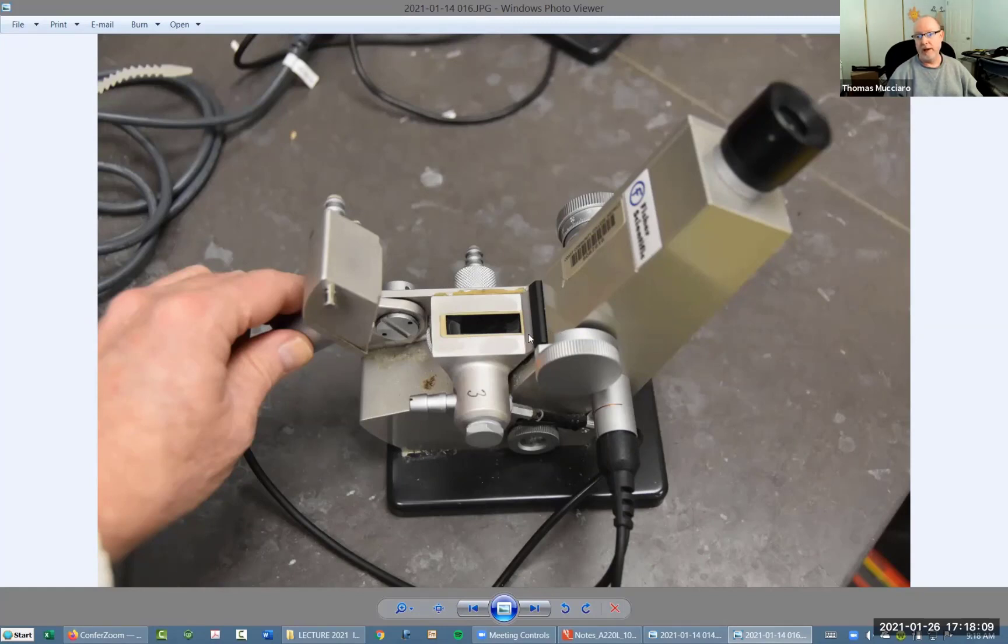Then we shine the light through. What we're going to be measuring is how much did the light bend when it went into the liquid, and then it goes back into the prisms.